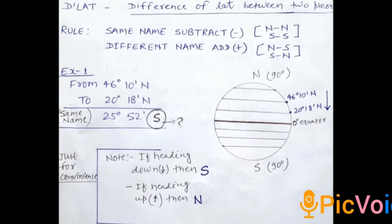Starting with the first example, we are moving from 46 degree 10 minute North to 20 degree 18 minute North. Here we have same name North-North, so we will subtract and we got the result 25 degree 52 minute.